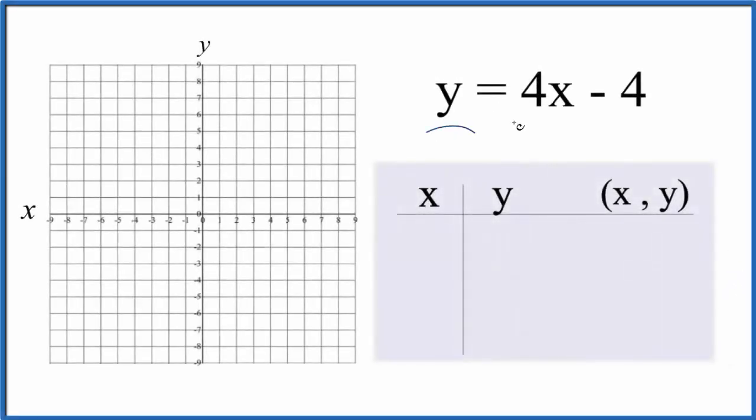Let's draw the graph for y equals 4x minus 4 and we're gonna do it two ways. First we'll use a table of values, then we'll check our work with slope intercept formula.